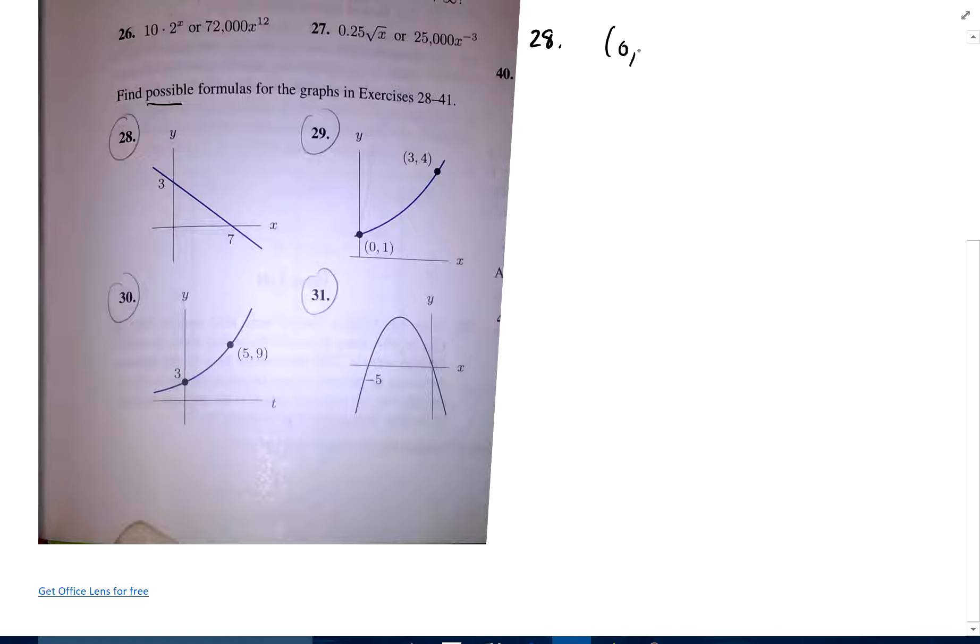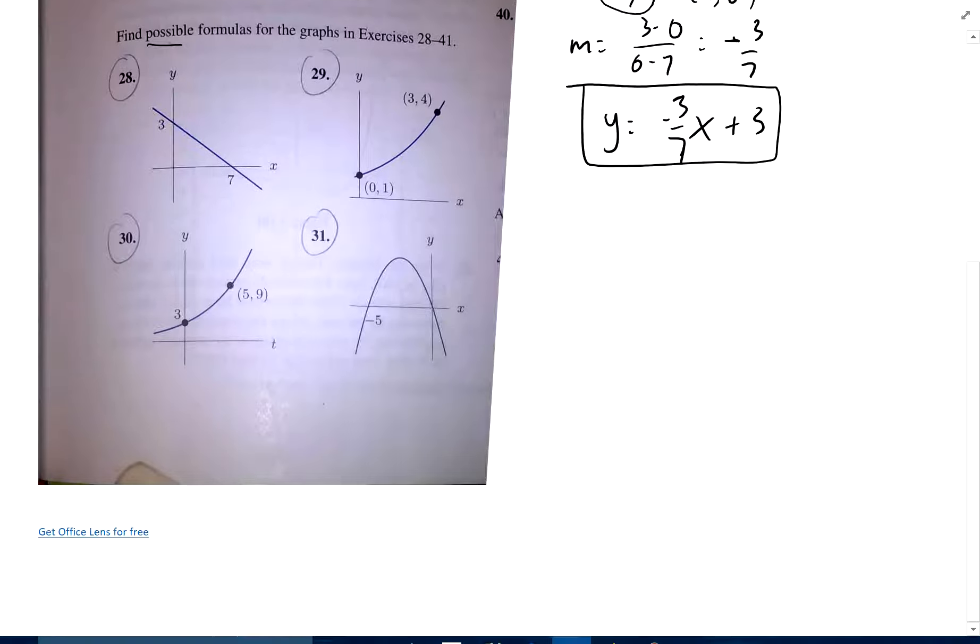It goes through the point (0, 3) and (7, 0). So the slope is 3 minus 0 over 0 minus 7, which is negative 3 sevenths. So my equation, since I know the y-intercept, I can immediately say y equals negative 3 sevenths x plus 3. So there's my equation for that line.